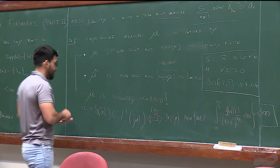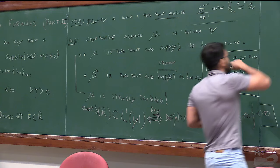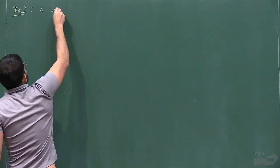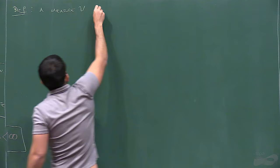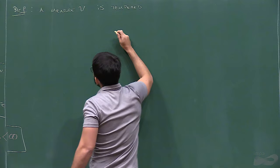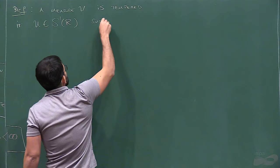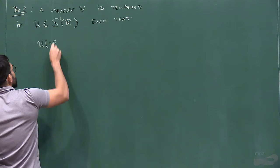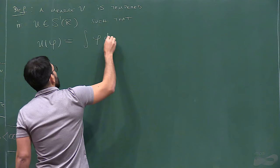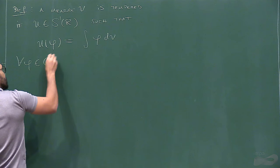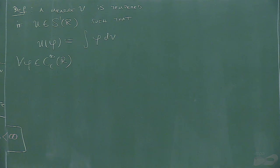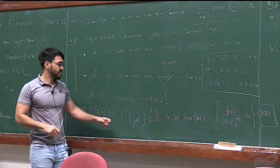A measure nu is tempered if there exists a tempered distribution u such that u evaluated at some test function phi equals the integral of phi with respect to nu, for every phi in C-infinity with compact support. There is the exercise of showing that these two definitions—strongly tempered and just tempered—are not the same.